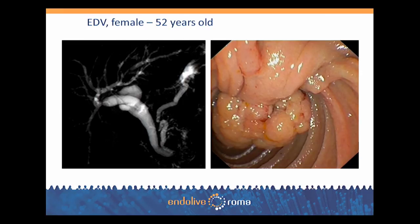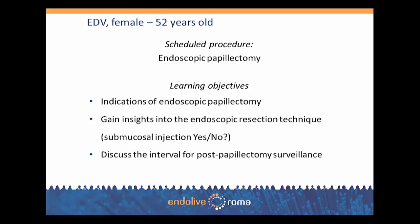MRCP shows dilation of the common bile duct at 14 mm in diameter, main pancreatic duct at 6 mm in diameter, and upstream biliary dilation. At the site of the ampulla of Vater, we can see a filling defect corresponding to the ampulloma just mentioned. The scheduled procedure is endoscopic papillectomy.